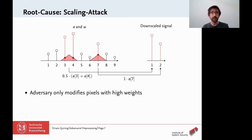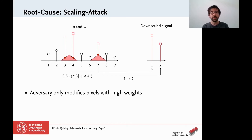Therefore, an adversary only needs to modify those pixels with high weights by setting them to the target value. The rest of the image remains unchanged, as the example shows. In this way, we achieve both goals of the attack: after downscaling we exactly obtain the target signal, but before scaling we only modify a small portion of the original signal. Many pixels keep their value and the adversarial signal is rather unnoticeable.